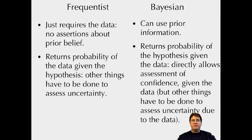And just comparing those two approaches, so frequentist, just requires the data. No assertions about prior belief. It returns the probability of the data given the hypothesis, which gives us that point estimate. There are other things you can do to assess uncertainty. So you can look at the curvature at the likelihood surface. You can do various bootstrapping approaches. There are various tests you can do, but it doesn't directly come out of this method.